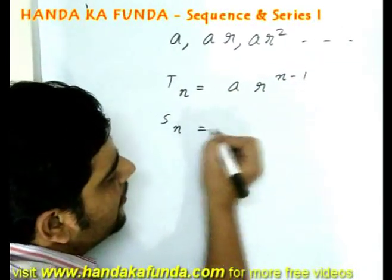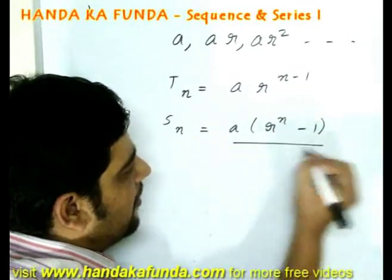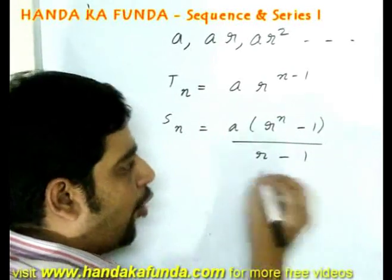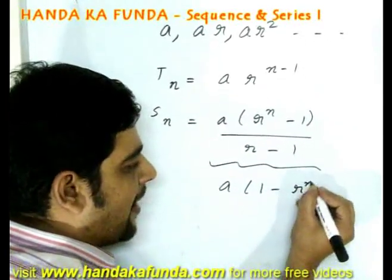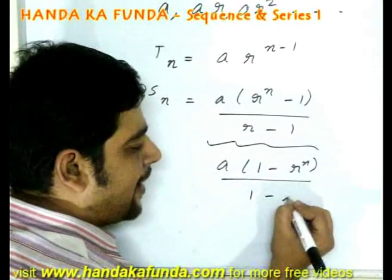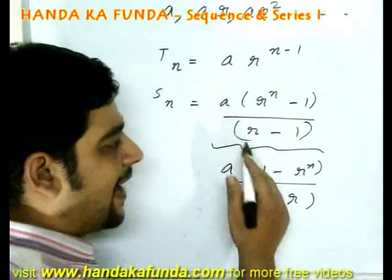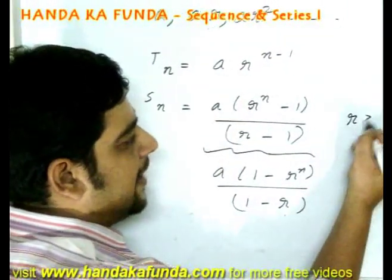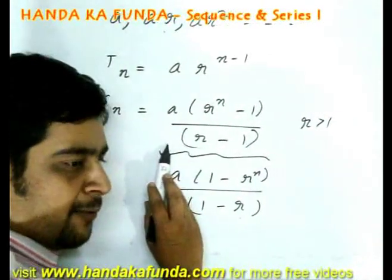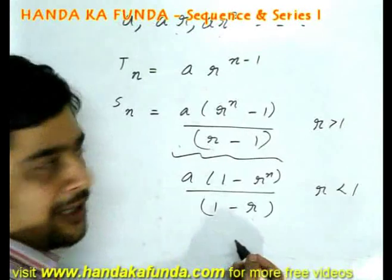Sum till n terms is given by a r to the power n minus 1 by r minus 1. It can also be given by a 1 minus r to the power n by 1 minus r. It depends which formula you use. That is defined by the value of r or the common ratio. If r is greater than 1, then you need to use this formula. If r is less than 1, then you need to use this formula.